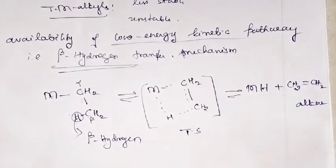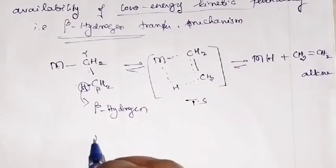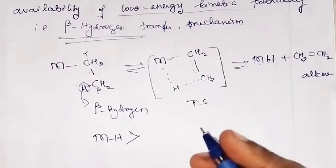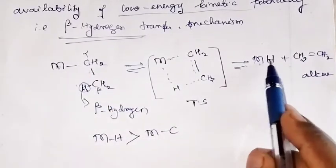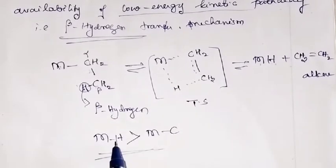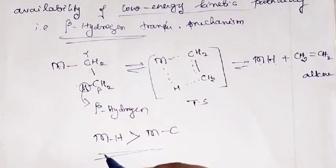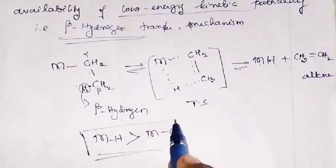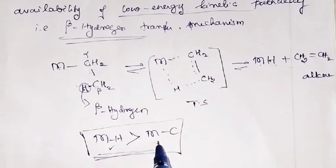Why does this reaction occur? Mainly because the M-H bond is much stronger and much more stable than the M-C bond. Since the M-H bond is much stronger, formation of the M-H bond is energetically favorable. That is the main reason why the beta hydrogen transfer mechanism occurs — in order to form the metal hydride, which is more stable than metal alkyls.